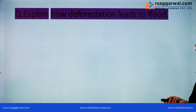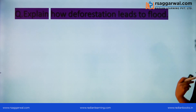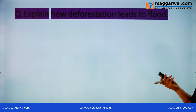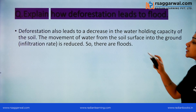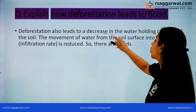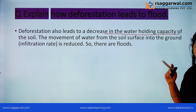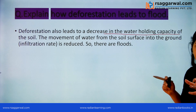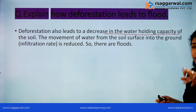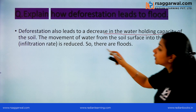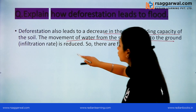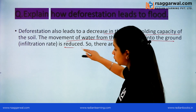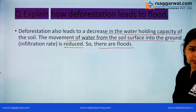Next: Explain how deforestation leads to floods. Deforestation decreases the water-holding capacity of the soil. If the soil cannot hold water, water runs off the surface. The movement of water from the soil surface into the ground is reduced, and so there are floods.